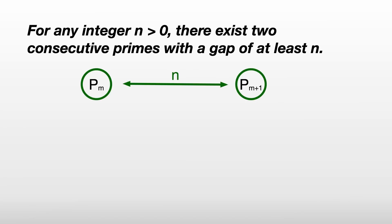And by consecutive primes, we mean there's no prime between them. So for example, if you were to ask me for two consecutive primes with a gap of at least 1,000, it would be possible to find an example.